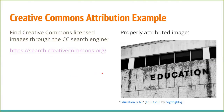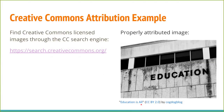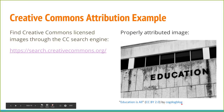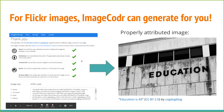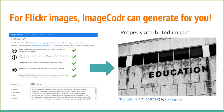Creative Commons also has graphics you can use to indicate these different licenses. Here's an example of an image with Creative Commons licensing. The essential ingredients are the name of it, the type of license, and the attribution to who created it. So the title of this is 'Education is All,' it is a CC BY 2.0 license, and the creator is CogDogBlog. All of these are links, so you could go there and see more things by CogDogBlog if you wanted to.